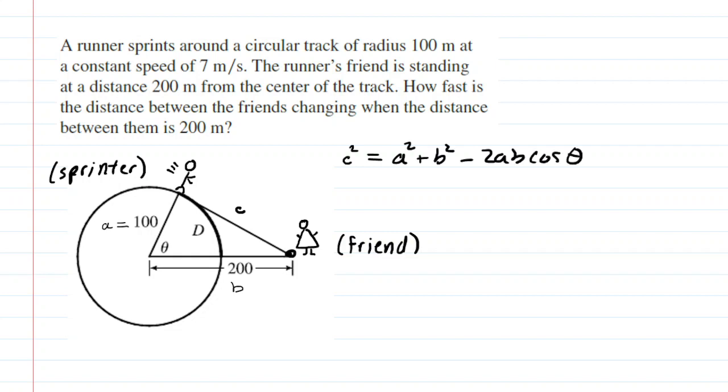Now, it turns out that a and b are constants, but let's understand that. A is the radius of the circle, so no matter where the runner is around the circular track, that radius is going to remain a constant. So we're going to plug in a constant of 100 for a.